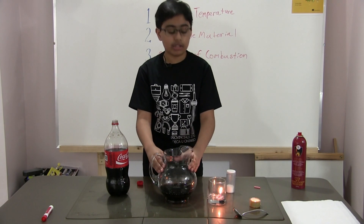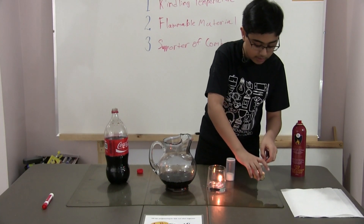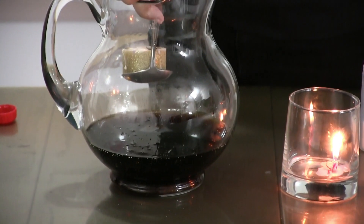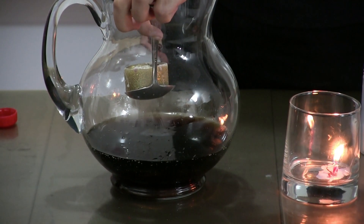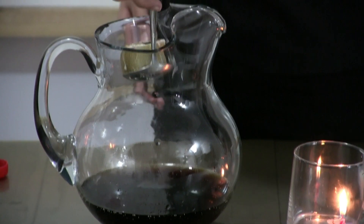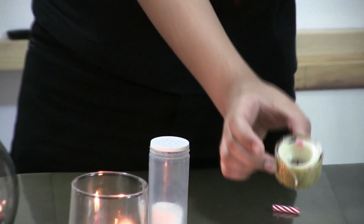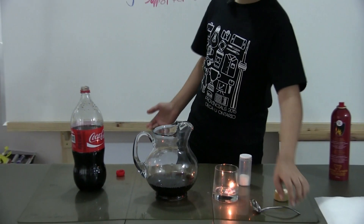Technically speaking, if I were to take this candle — as you can see it is lit — and put it down into this jug, it should in theory go out. And as you can see, the candle has gone out. It is no longer lit. This is because there was no supporter of combustion in there, so it wasn't able to stay put and the carbon dioxide has essentially put it out.